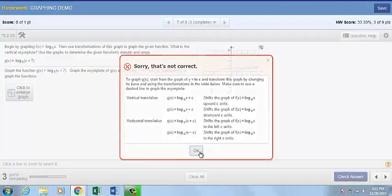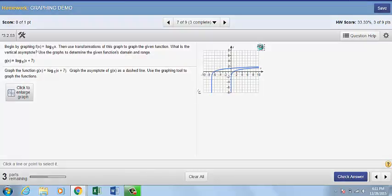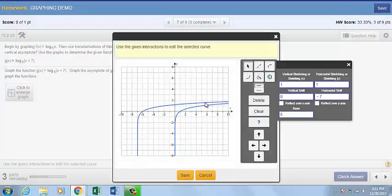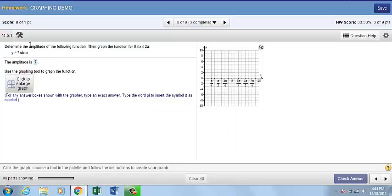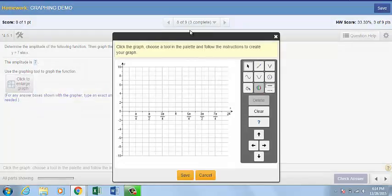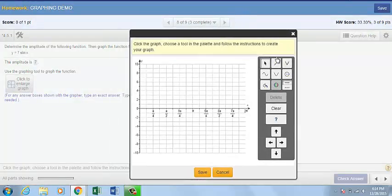If we find that it's not correct, we can return to our graph and, again, use the tools to work on stretching or shrinking. The question may ask you to complete, for example, the amplitude or phase shifts and then click to graph. Notice, when we graph a trigonometric function, we are given tools such as the sine tool or the cosine tool.